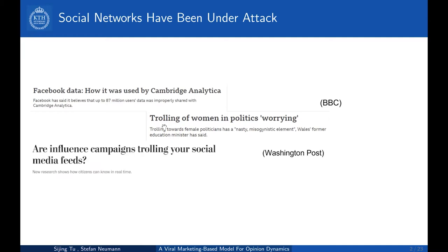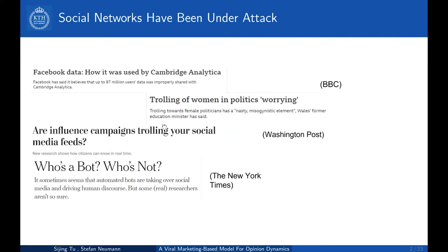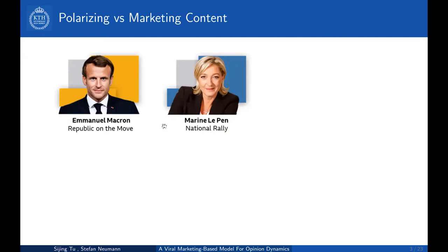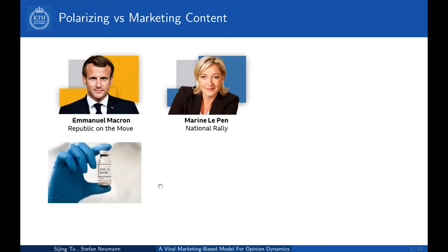We also observe that there has been trolling and fake news going around in the network, and somehow these have been related to shaping people's opinions, even though it might be subversive and indirect. We observe that viral content spreads in the network, and there might be different types. For example, viral content related to societal issues such as presidential elections and vaccination — people have very strong opinions about this content, and they will either like it or hate it. We call this type of content polarizing content.